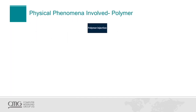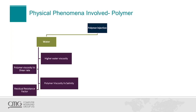The phenomena involved can be divided in three groups depending on which phase we are affecting. The first group is the water phase. The viscosity of the water increases with the polymer concentration, and this alters the mobility ratio. The mobility ratio is the relationship between the mobility of the water and the mobility of the oil, where mobility is the relative permeability over the viscosity. When we increase the viscosity, that relationship reduces the mobility ratio, and we create a better and uniform waterfront and push the oil more efficiently.